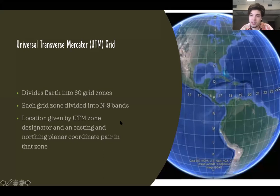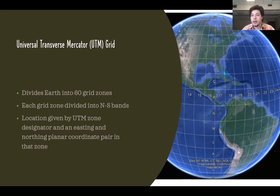One specific grid system we'll be talking about this week is the universal transverse Mercator grid, or UTM. You can see an example of the world broken up into UTM grid zones over here on the right. UTM divides the earth into 60 of these grid zones, then each grid zone is divided into north-south bands. And then the way you actually find location within UTM is by a UTM zone designator and an easting and northing planar coordinate pair for that given zone.